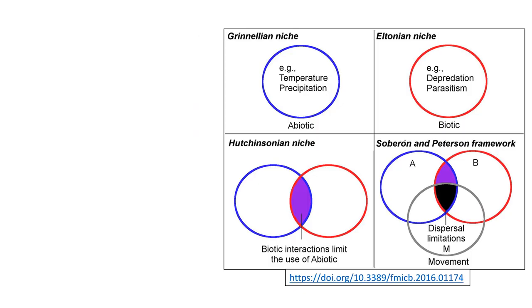We have three or four different ideas to consider. The first one is the Grinnellian Niche. This idea is originally focused on the abiotic factors delimiting an organism's occurrence. Under this scenario, all suitable abiotic conditions in the circle are accessible for the species or for a parasite.